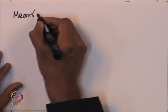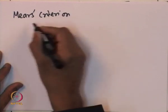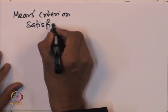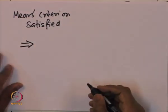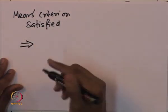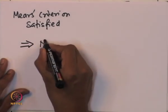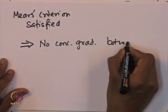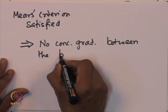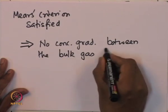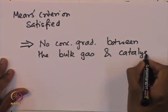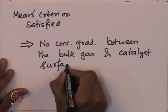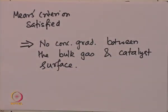Here rho_B is the bulk density of the catalyst given by (1 minus phi) times rho_C, where phi is the bed porosity. N is the reaction order, and k_C is the mass transfer coefficient. One may use appropriate correlations available for flow through packed beds to estimate k_C.